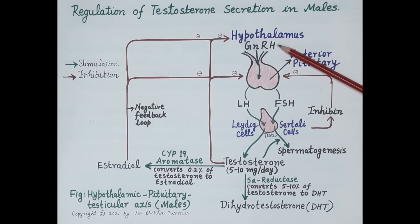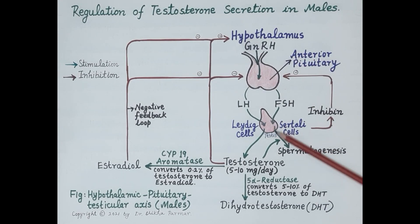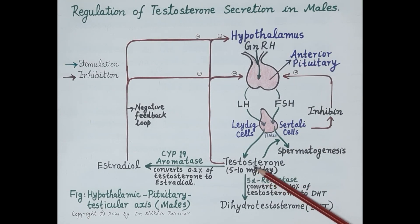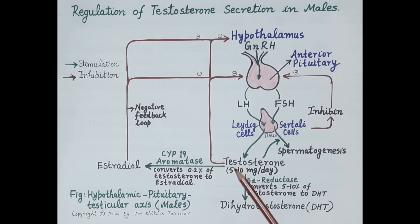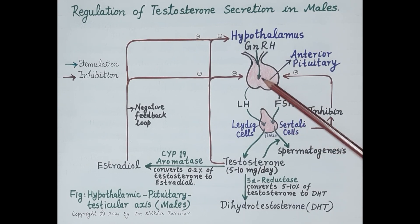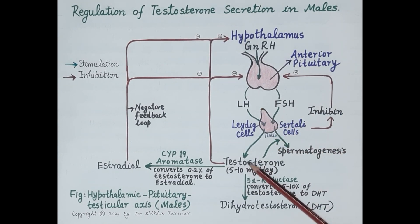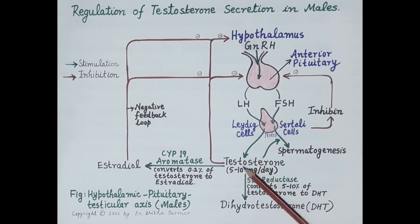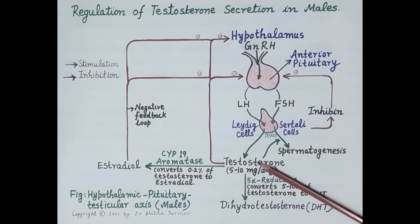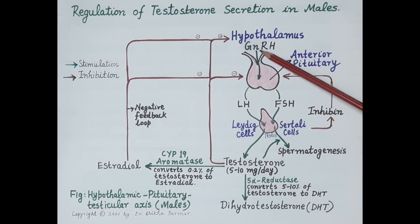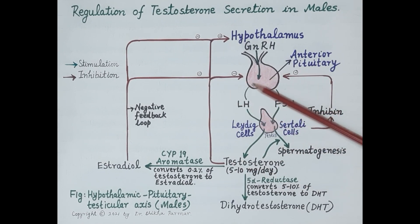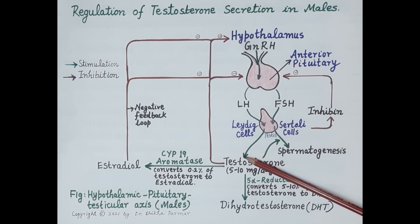When there is a fall in the release of GnRH, this causes a fall in the secretion of testosterone. Apart from this, increased levels of testosterone in the blood also inhibit the release of luteinizing hormone from the anterior pituitary. A fall in LH secretion results in a fall in testosterone levels. So whenever testosterone rises in the blood, it inhibits GnRH release and reduces LH secretion, which in turn reduces testosterone. This is called the negative feedback loop.